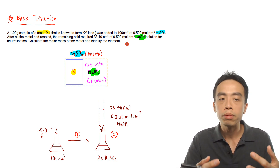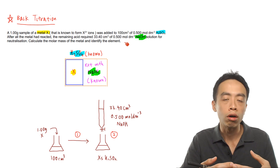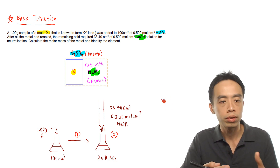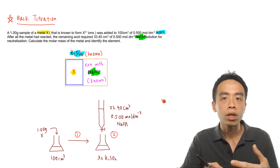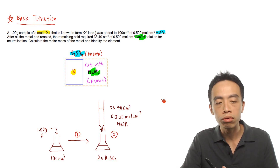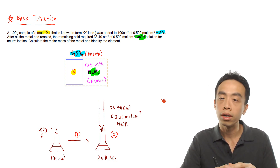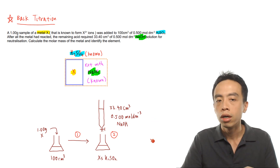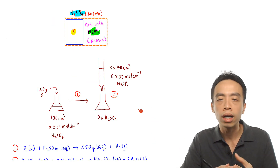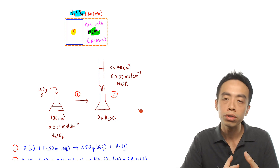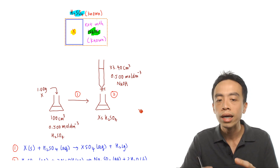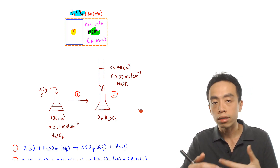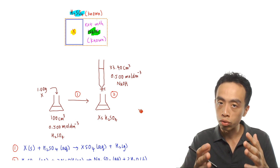Essentially, we have enough information to solve for the number of moles of X. Before we do the question, when we do solution stoichiometry, it is easier to visualize the process if we draw the entire setup, and put down all the values involving concentrations and volumes in this diagram so that when we answer the question, it is with reference to the diagram.